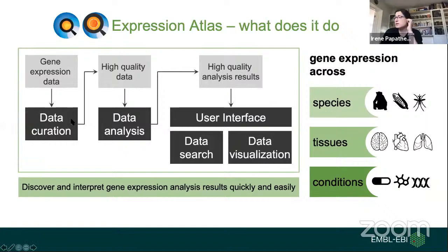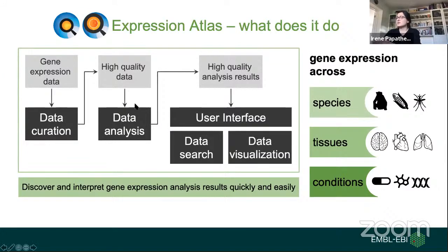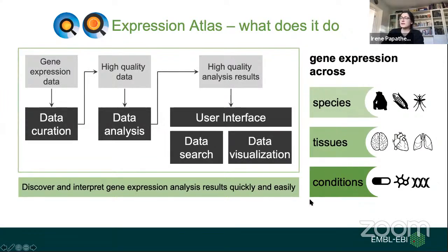Once we gather this information and enable reanalysis, we check that the raw data are of good quality and perform a standardized data analysis — using the same pipeline for the same type of data — producing high-quality analysis results that we store and serve through a user interface enabling data search and visualization. We cover all kinds of species, tissues, and conditions, and aim to enable discovery and interpretation of gene expression results quickly and easily by biologists, bioinformaticians, or any kind of user.